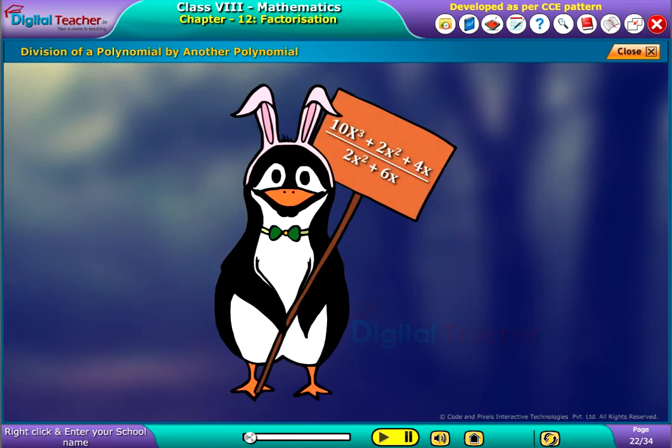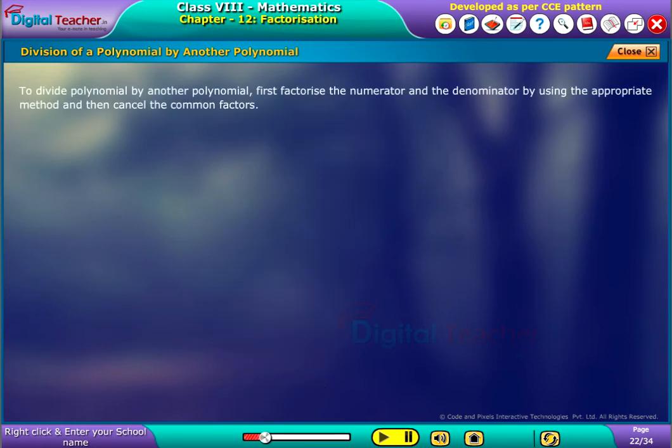Finally, we are going to see the division of a polynomial by another polynomial. To divide a polynomial by another polynomial, first factorize the numerator and the denominator using the appropriate method, and then cancel the common factors.